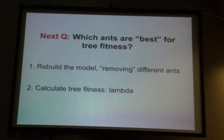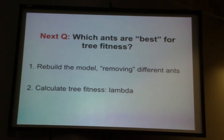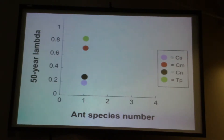We can also ask what happens to tree population fitness if we have a combination of two species — any of the possible permutations of those four species broken down into two-species communities — or three species, or the four-species community that we have. We can then look at population lambdas and see how well the population was growing with those combinations of ants on them.